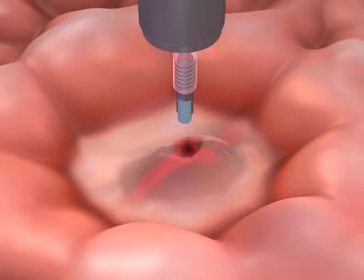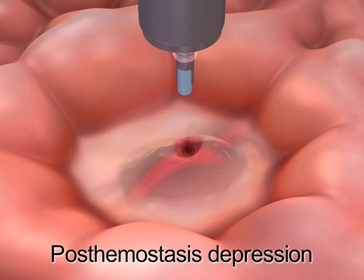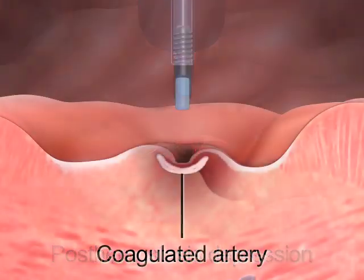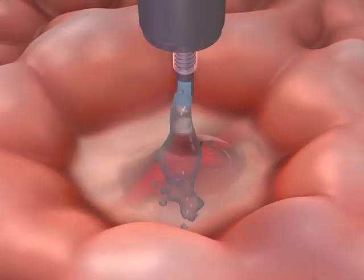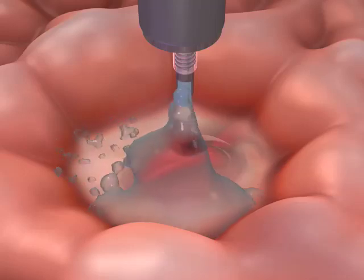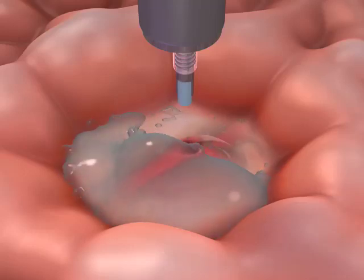Treatment should continue until the active bleeding has stopped, or the protuberance of the non-bleeding visible vessel has been completely flattened. The endoscopist should observe a post-hemostasis depression, or footprint, on completion of the contact thermal therapy, confirming the approximation and fusion of the superficial tissue layers and the deeper tissue layers. This area should then be irrigated with water through the contact thermal probe and observed for any possible post-treatment bleeding.